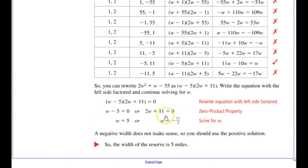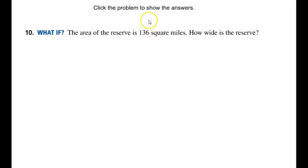We always want to look at our answers in the context of the problem to see if they actually make sense. Here is your last monitoring progress problem: if the area is 136 square miles and nothing else has changed, try to figure out the width of the reserve.